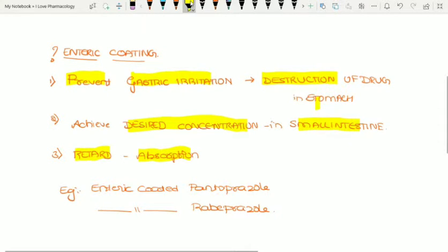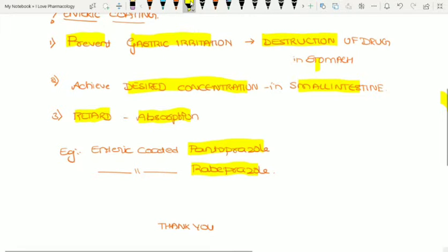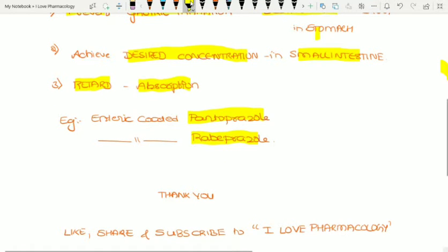Examples of enteric coated tablets are enteric coated pantoprazole and enteric coated rabeprazole, which comes in combination with domperidone. Thank you. For more updates, please like, share, and subscribe to I Love Pharmacology.